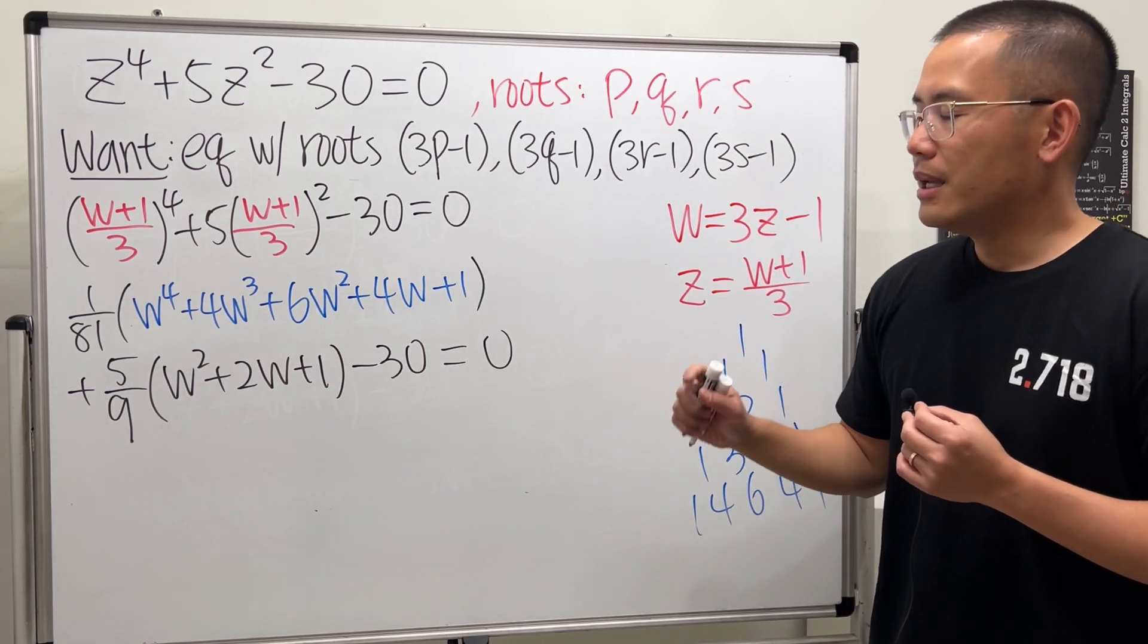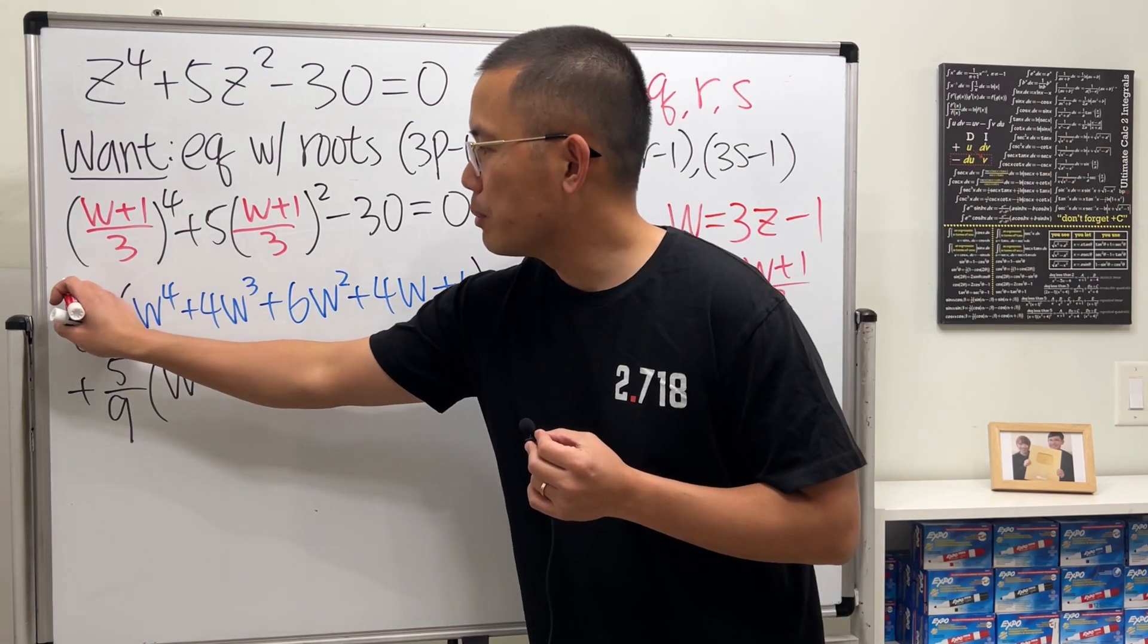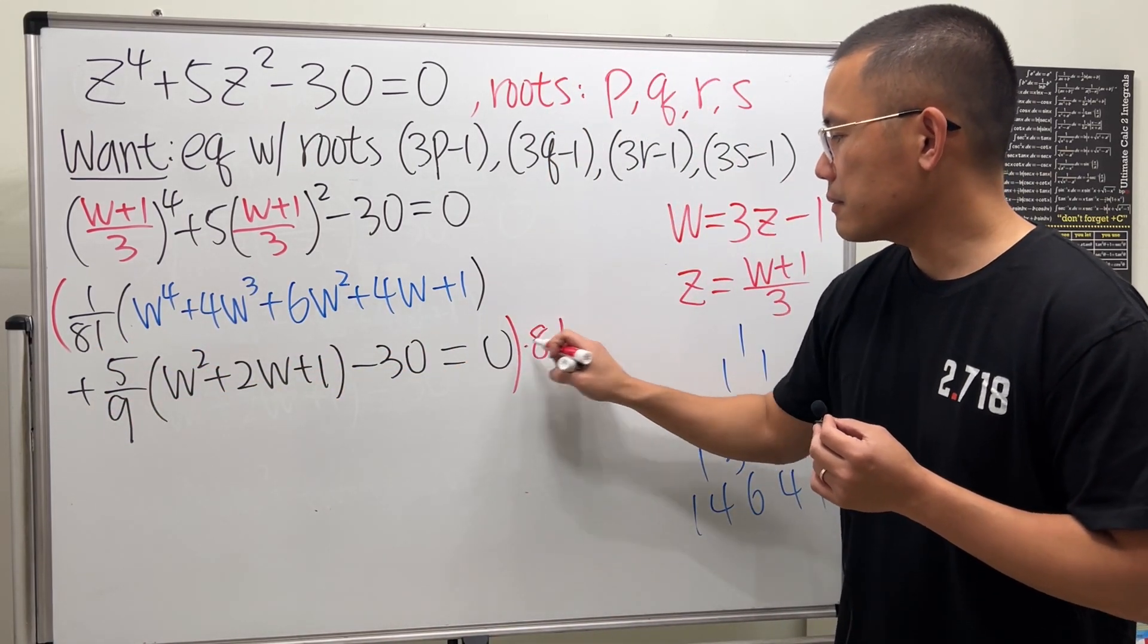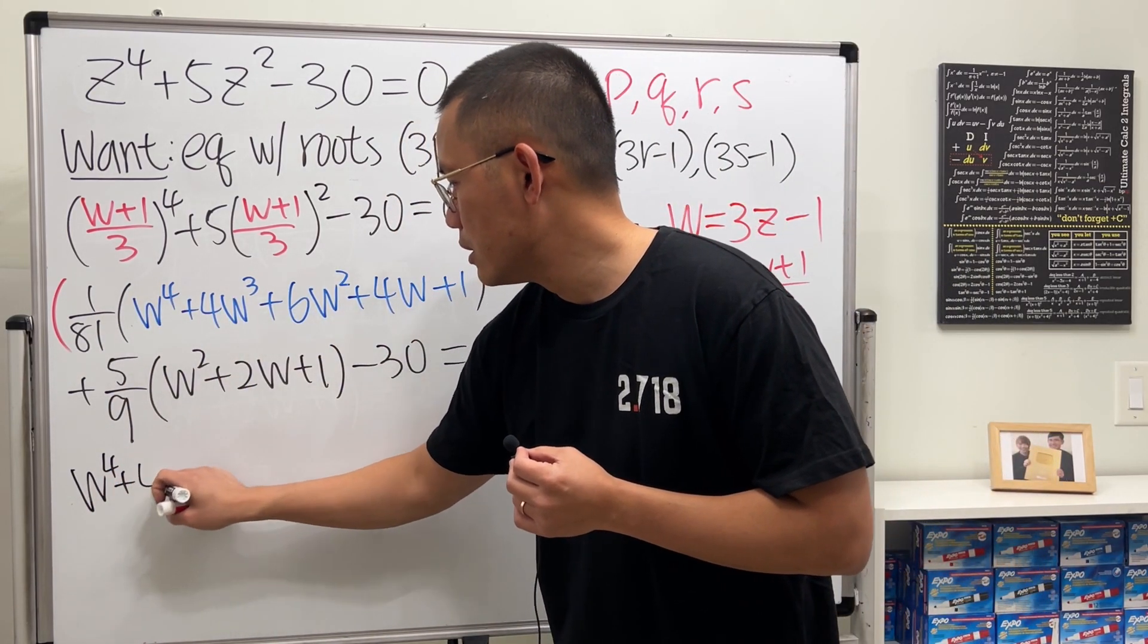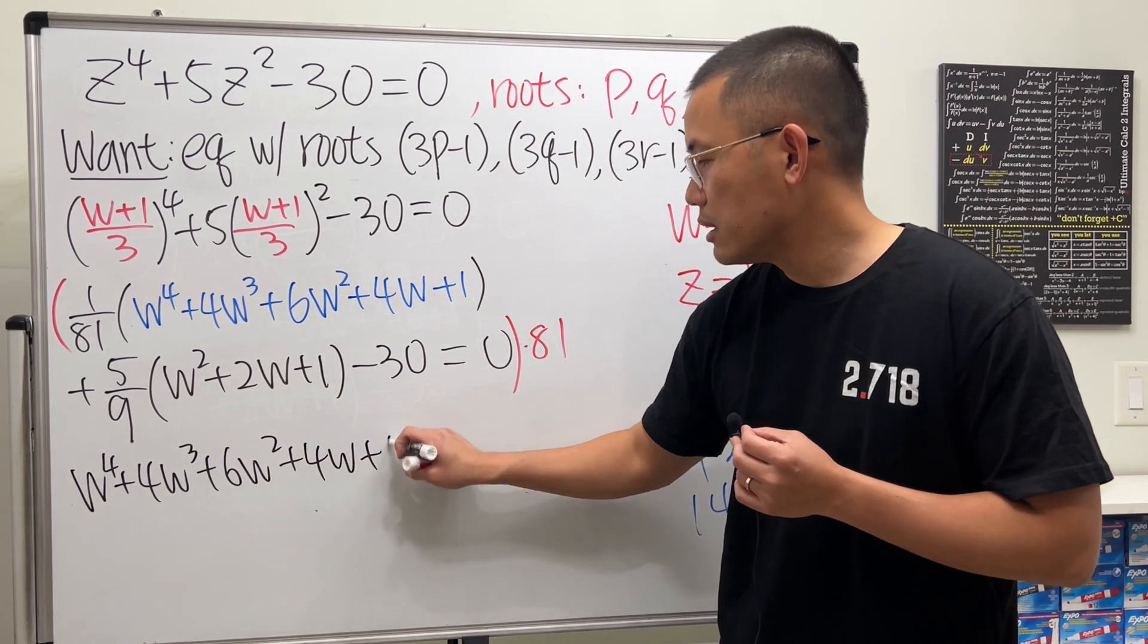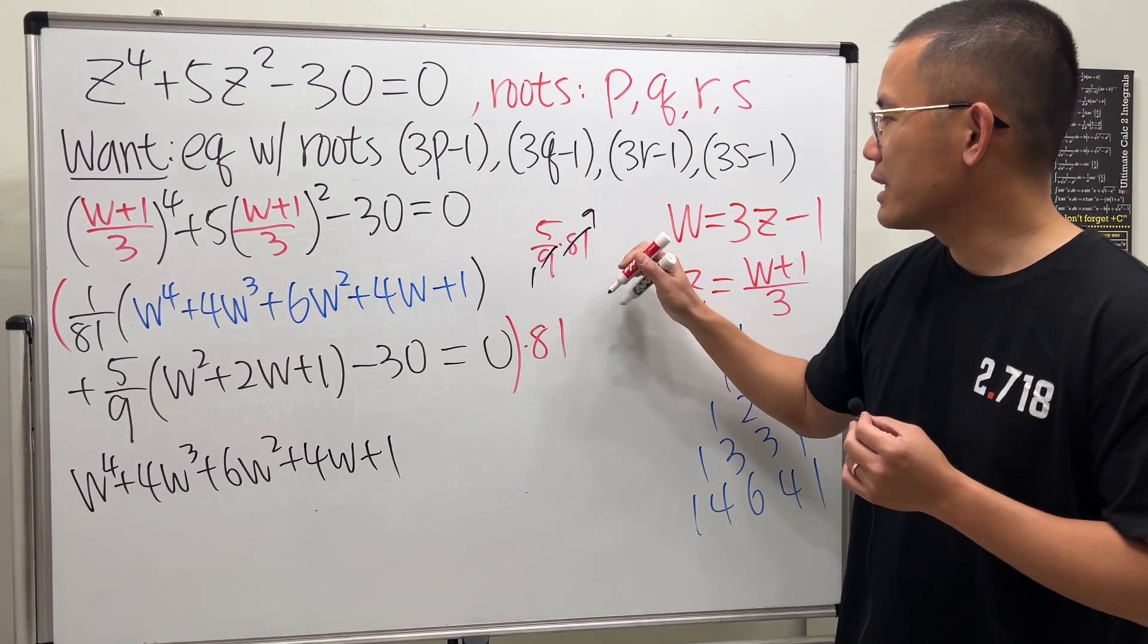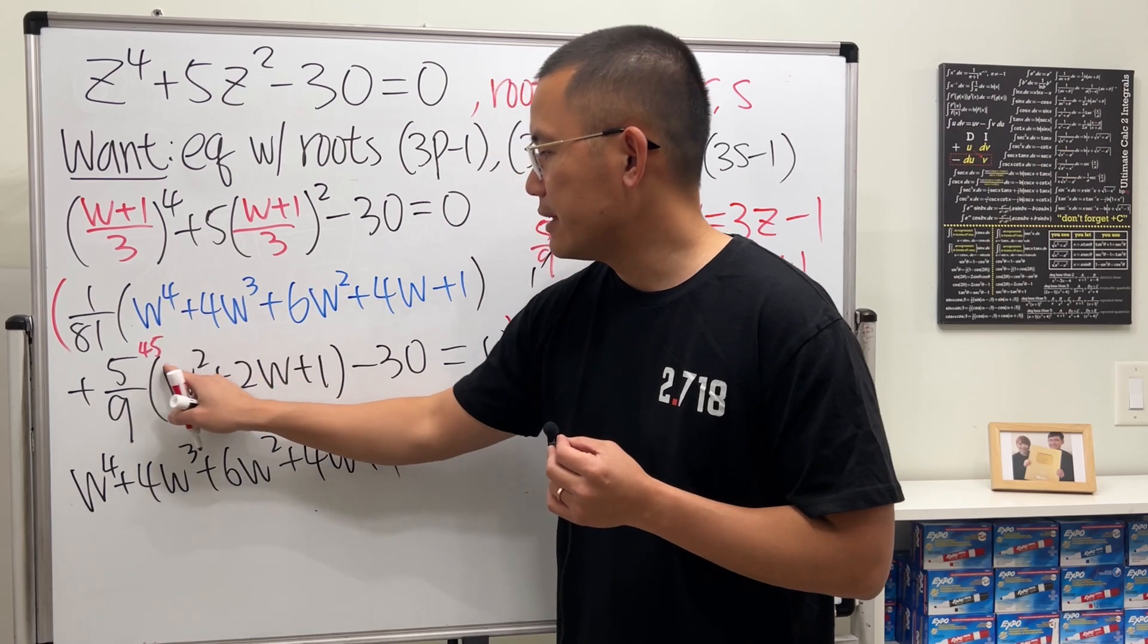We are almost done. The question wants the leading coefficient to be 1. So I'm going to multiply everything by its denominator, which is 81, which happens to be the least common denominator. So 81 times this, they cancel, so we just have all that. And then 81 times 5/9.